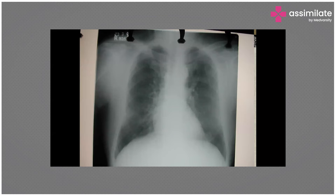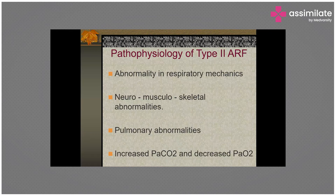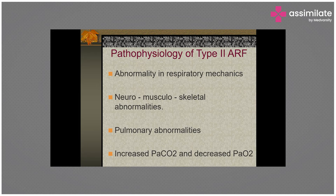Left ventricular failure leads to Type 1 respiratory failure with pulmonary edema and hypoxemia, not Type 2. Type 2 respiratory failure is seen with abnormalities in respiratory mechanics, neuromuscular or skeletal abnormalities, and pulmonary abnormalities. Patients with COPD, interstitial lung disease, or neuromuscular disorders like Duchenne syndrome, Ehlers-Danlos syndrome, or critical illness myopathy can have Type 2 respiratory failure.